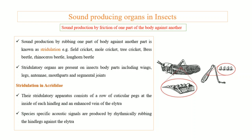In family Acrididae, the stridulatory apparatus has circular pegs on the hind legs and an enhanced vein on the elytra. Rhythmically, they rub their elytra with their hind legs, which causes sound to be produced.